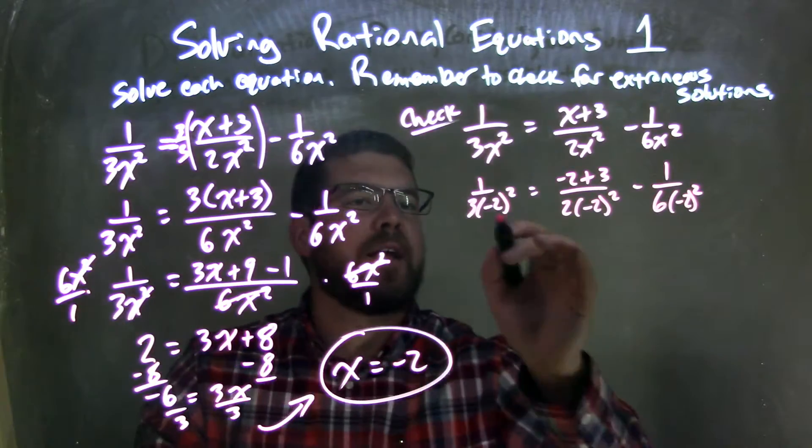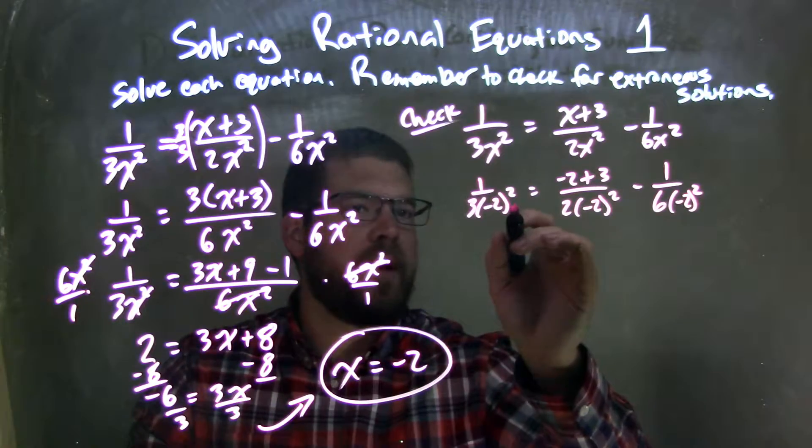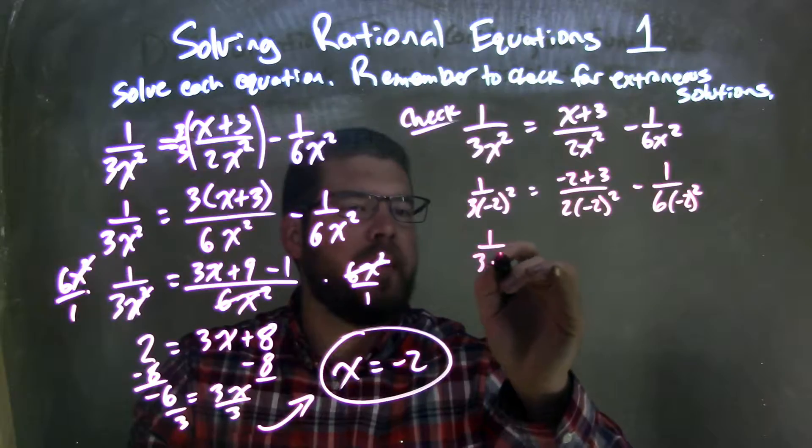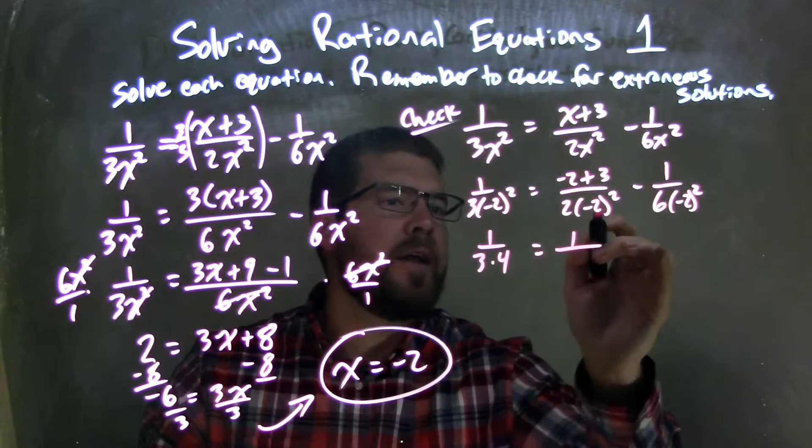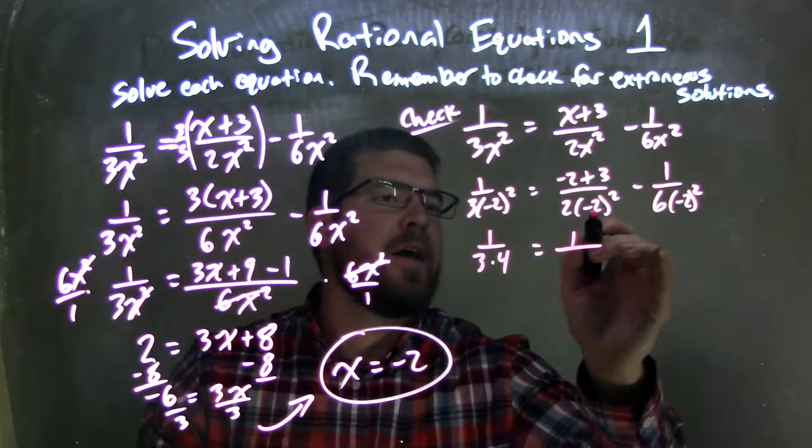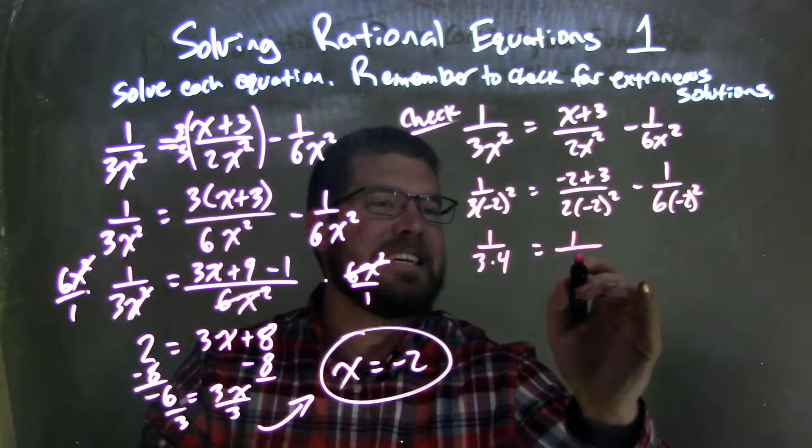Negative 2 squared comes out to be 4, so we have 1 over 3 times 4. Negative 2 plus 3 is 1. I'm going to do it all together here: negative 2 squared is 4, and 4 times 2 is 8.